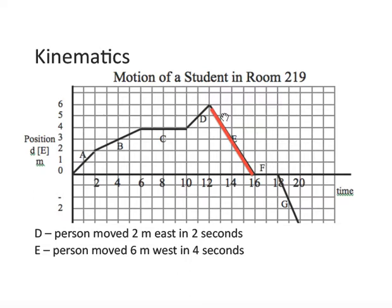And then for section E, person hasn't moved east anymore. Now notice they're moving back to where they started, back to position zero. And altogether, they move six meters west. Notice the slope is negative. On a position time graph, when the slope is positive, they're moving east. But when the slope is negative, they're moving west.